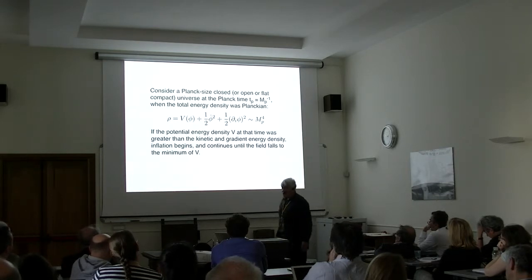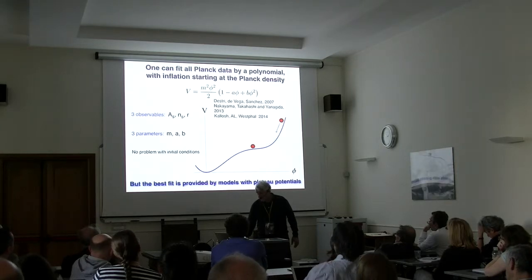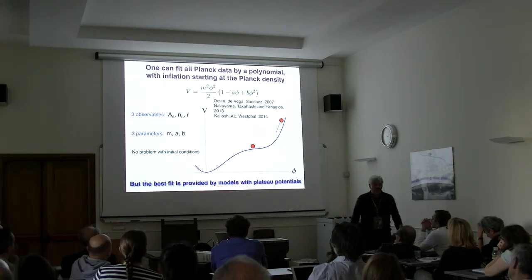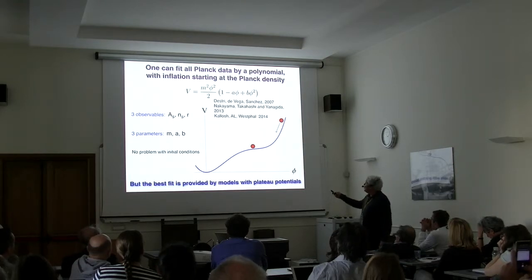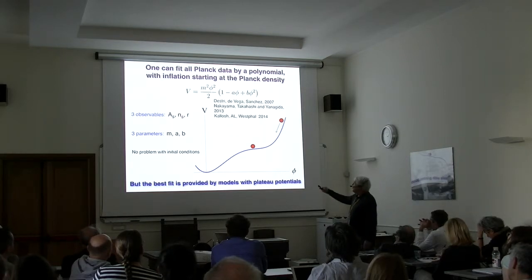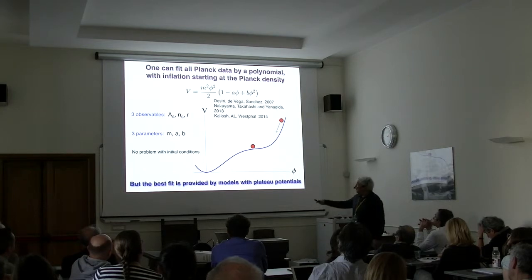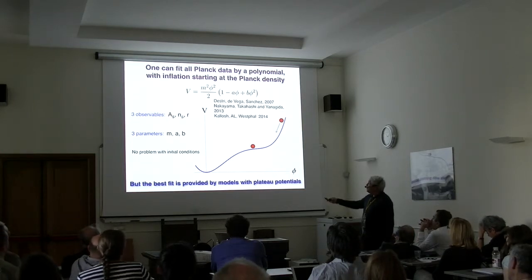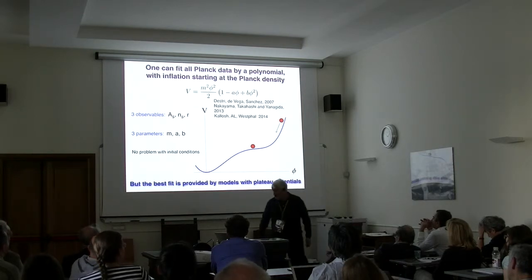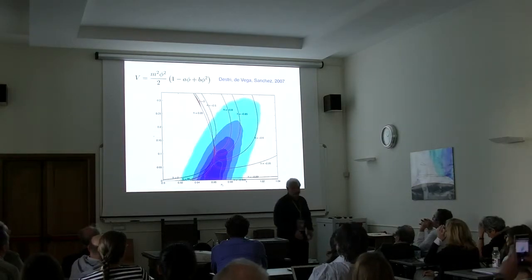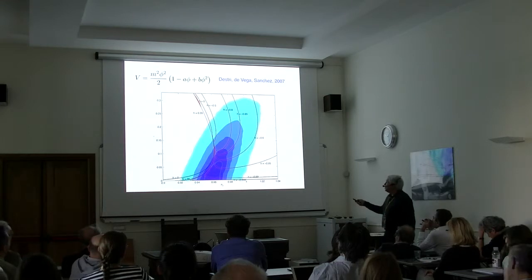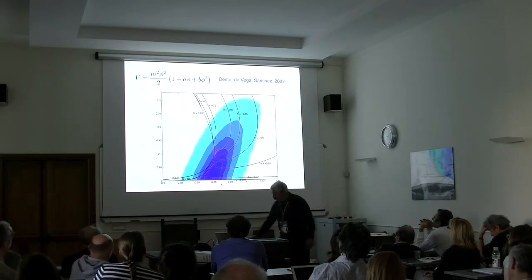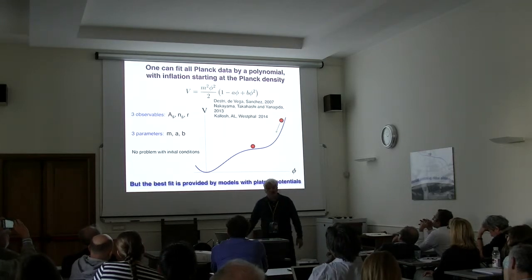This model would describe Planck data pretty well. You can take a polynomial with quadratic, cubic, and fourth-degree terms — giving a potential with three observables (amplitude of perturbations, ns, and r) and three parameters (m, a, b). You can fit any observational data that way. This was done long ago by certain authors who showed these models can cover just about everything. You can start inflation at Planck density with no problems for initial conditions, but this approach is not elegant.